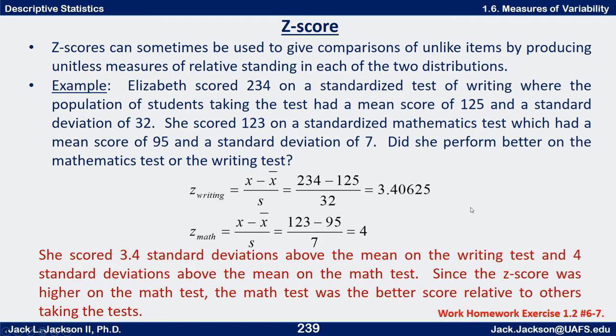What does this mean? On the writing test, she scored about 3.4 standard deviations above the mean, and about 4 standard deviations above the mean on the math test. In fact, that's extremely good. This puts her way up in the top scores on both tests. Both are extremely good scores, but the one on the math is even better than the one on writing. So relative to the other students taking the test, her math score was the better one.